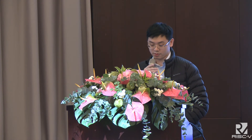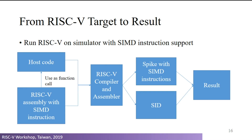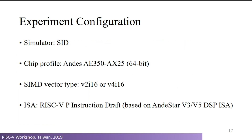After obtaining the assembly code, we package it as a library. Then we use a host code to call the library, and together they form a complete AI inference program. We pass it through the assembler and linker, then use two simulators to get results: one is Spike, the other is the ANDES simulator. Our experiment configuration uses the ANDES simulator for performance evaluation, provided by Andes Technology, with the chip profile being ANDES AX25 — a 64-bit chip. The SIMD vector types used are 2-element and 4-element vectors with 16-bit integers, using the RISC-V P extension instructions based on the Andes DSP ISA.